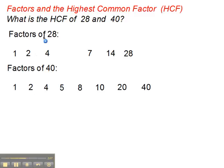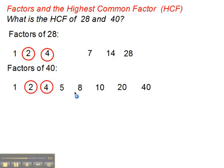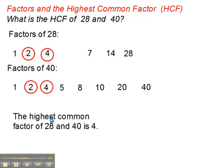So we've got all the factors of 28 and all the factors of 40. We want to look at common factors. Well, 2 is common. 4 is common. But if you look, there are no bigger common factors. So the highest common factor of 28 and 40 is 4.